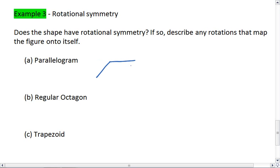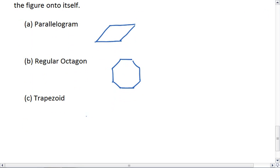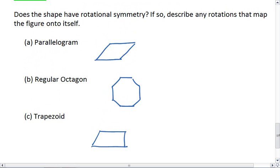If you need a little help getting started, your parallelogram is going to look like this. A regular octagon is going to look something like that. Imagine all the sides were congruent. It's going to look like a stop sign, actually. And a trapezoid is going to look like this. Take a moment, try to work this out on your own first, and then resume the video when you're ready to check your solution.